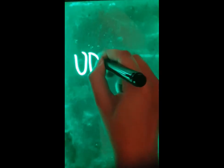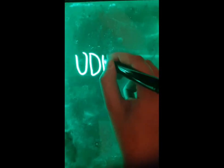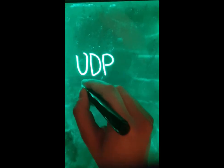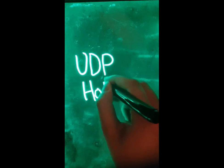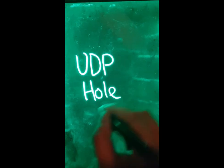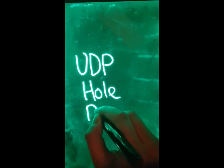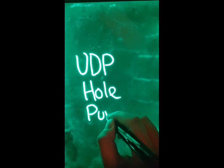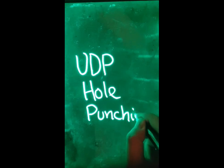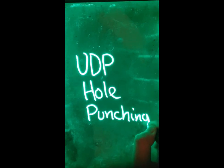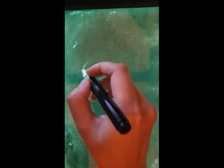UDP hole punching is a method used to make clients communicate with each other and establish a peer-to-peer connection that runs on UDP when both clients apply NAT in their system. That was a lot of words that may appear unfamiliar, so let's go over them and understand UDP hole punching as a whole afterwards.